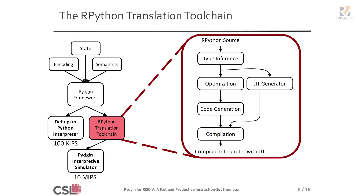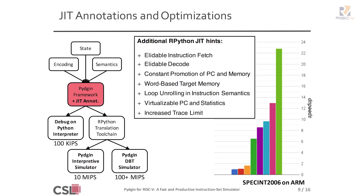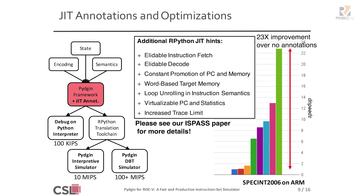If you just put Pigeon as-is without optimizations into the JIT, it actually isn't very optimal and you will typically see a slowdown. So we did extensive work adding optimizations to get real performance with JIT enabled. You need to state all the assumptions that the JIT compiler can make to optimize your code. By adding these optimizations one by one, we could get up to a 23x performance boost.